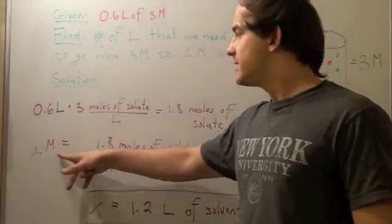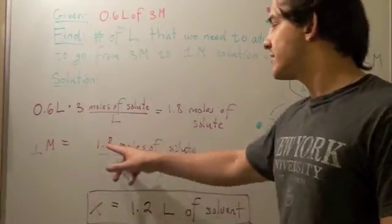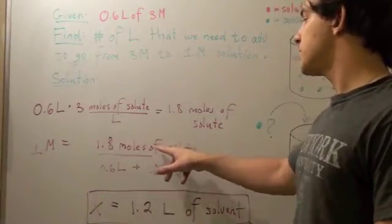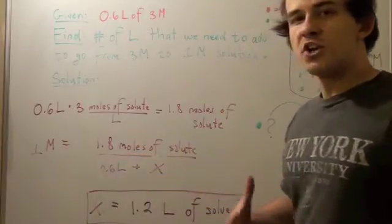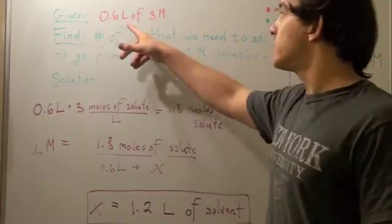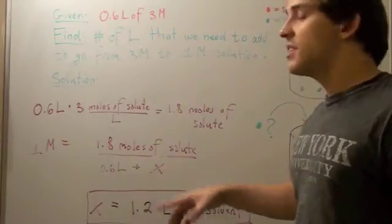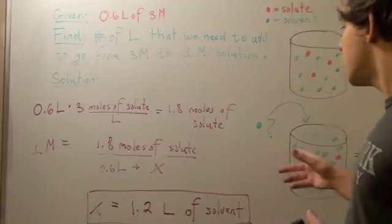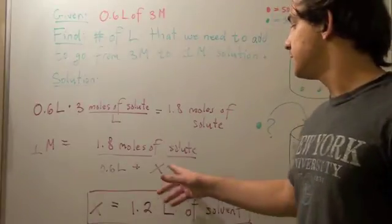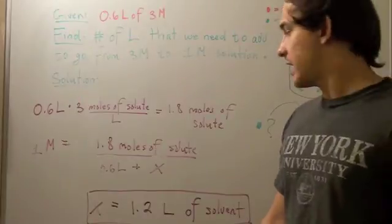1 molar is equal to the thing that stays constant, 1.8 moles of solute, over the amount we already have, 0.6 liters, plus the amount we need to add, the amount of blue dots that we need to add to the system to get a 1 molar solution.